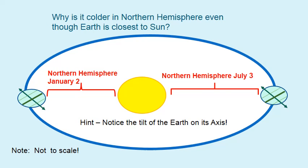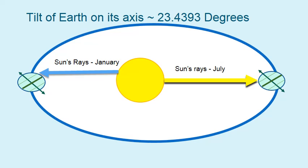Why is it colder in the northern hemisphere even though the Earth is closer to the sun in January? Look at the tilt of the Earth. The Earth is tilted on its axis approximately 23.4393 degrees. The sun's rays in January are coming in at an angle, whereas in June and July the sun's angles are more directly into the northern hemisphere.